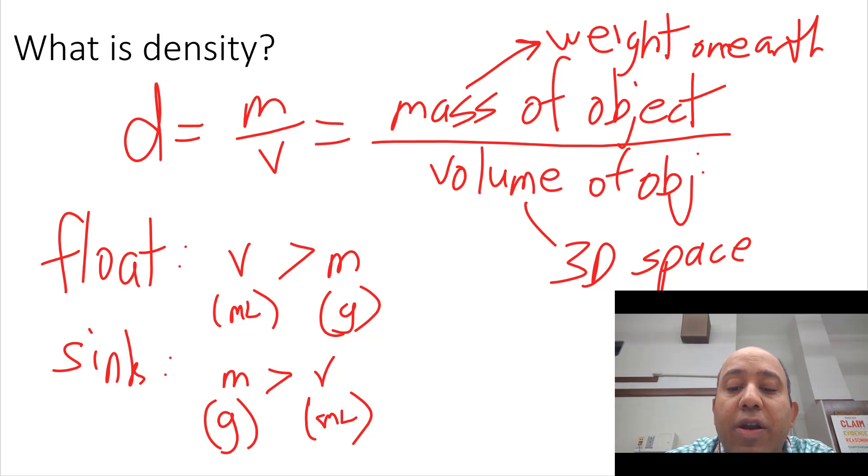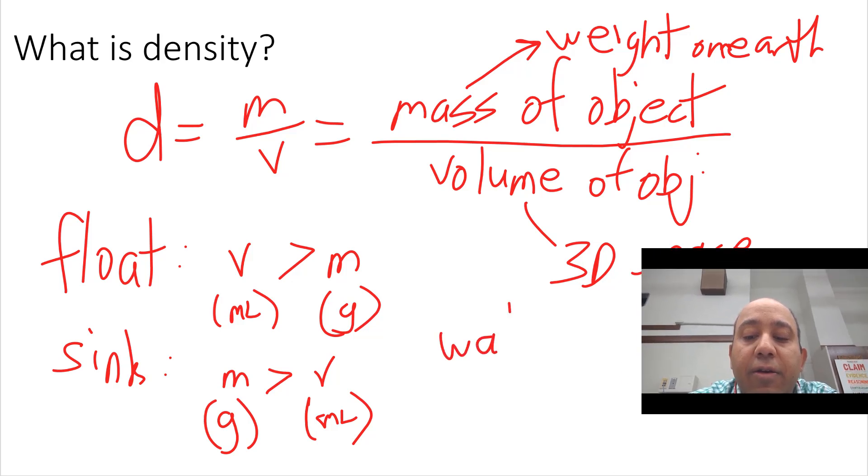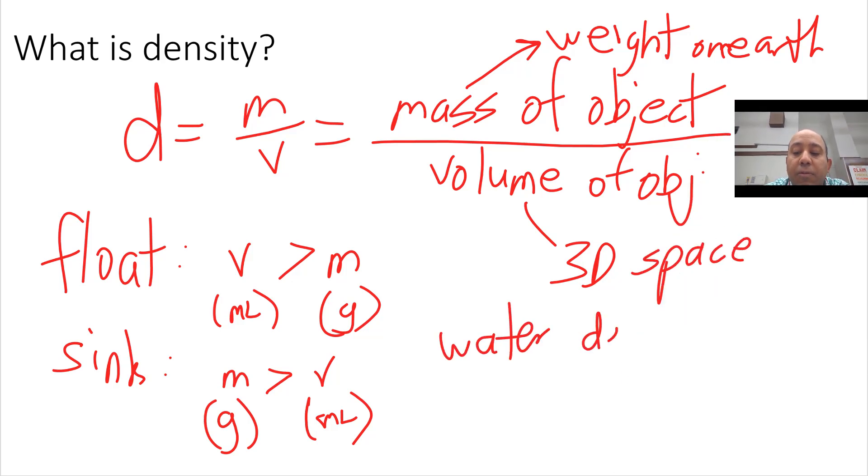So, what is the density of water then? Well, if you take one centimeter cubed of water, one centimeter on each edge, it would be one centimeter cubed. You'll notice that it actually weighs one gram.